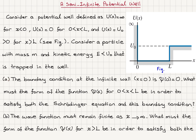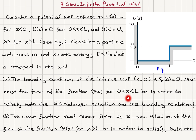Part A. The boundary condition at the infinite wall x = 0 is ψ(0) = 0. What must the form of the function ψ(x) for 0 < x < L be in order to satisfy both the Schrödinger equation and this boundary condition?